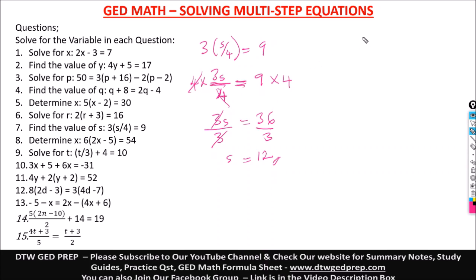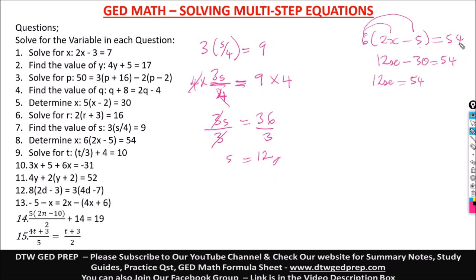Number 8: 6(2x minus 5) equals 54. Distribute: 6 times 2x is 12x, and 6 times negative 5 is negative 30, equal to 54. Collect like terms — take negative 30 to the other side, it becomes positive 30. So 12x equals 54 plus 30, which is 84. Divide both sides by 12, and x equals 84 divided by 12, which is 7.